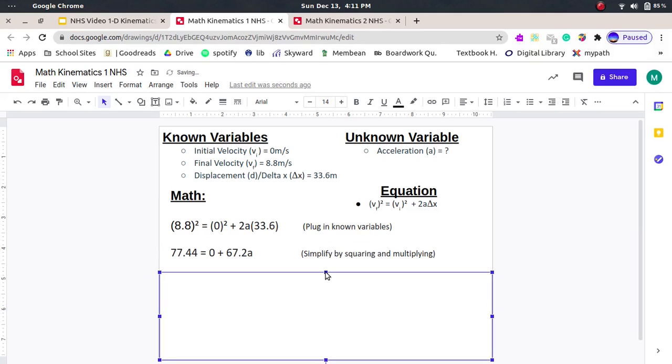Next, we're going to simplify by squaring and multiplying. So 8.8 squared is 77.44, and 0 squared is, of course, 0, and then 2 times 33.6 is 67.2.